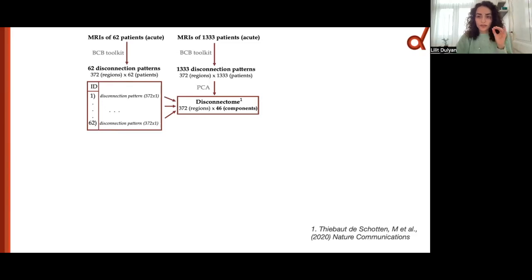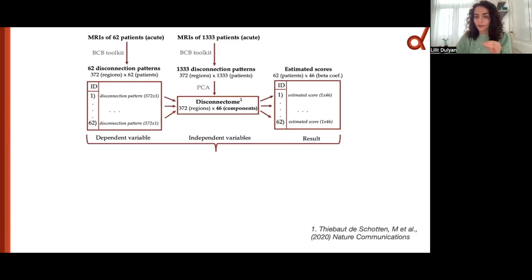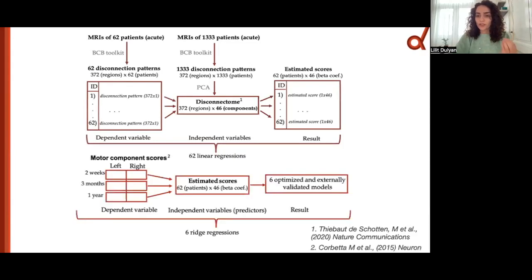This procedure gave us the patient's estimated score of each component. Then we used those estimated scores to predict two motor components for the left and right side of the body at three time points. We used ridge regression and we optimized and externally validated that model.